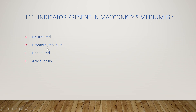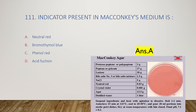Next question: the indicator present in MacConkey's media is neutral red, bromothymol blue, phenol red, or acid fuchsin? The right answer is option A, neutral red. This is the composition of MacConkey's agar, and neutral red is added as the indicator.